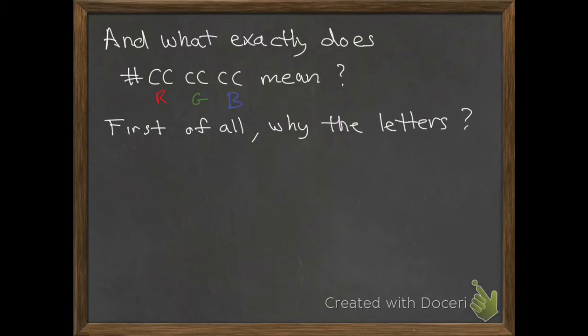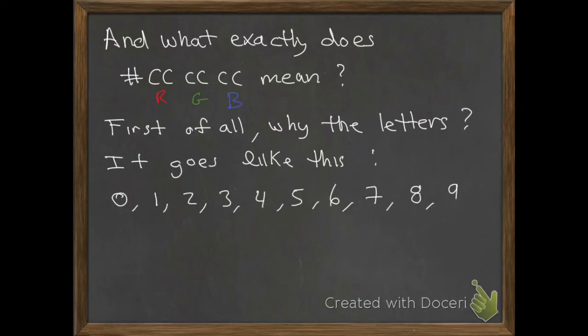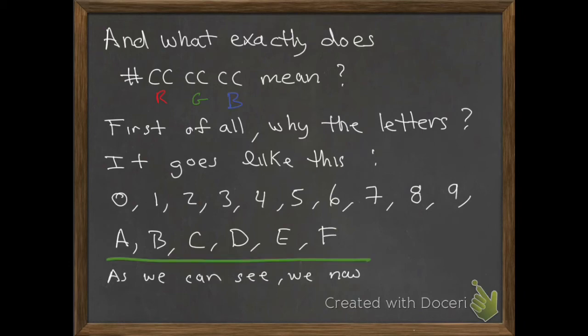Why the letters? It goes like this. If we write out our letters in our hexadecimal system, we have to have 16 digits or characters. We write out our numbers starting at 0: 0, 1, 2, 3, 4, 5, 6, 7, 8, 9. And then we run out of numbers, so we use letters A, B, C, D, E, F. As we can see, we have 16 characters, but we had to borrow some letters.